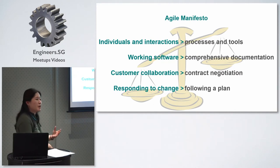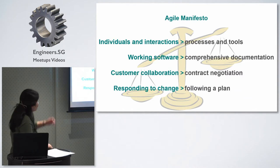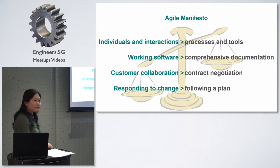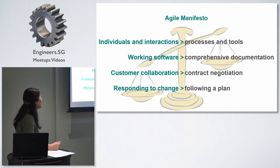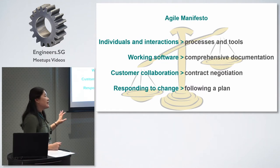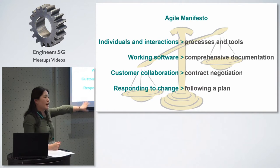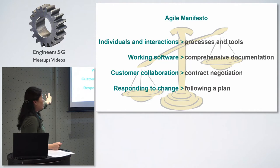Contract negotiation is where the money comes in. Without contract negotiation, we don't get any profit from the software. And following a plan is definitely important because without a plan, you have no goal, and without a goal, you don't see an end point. But the Agile Manifesto basically says that the items on the left should be more important than those on the right. Traditionally, we know those on the right build the software, but those on the left should be considered a lot more important.